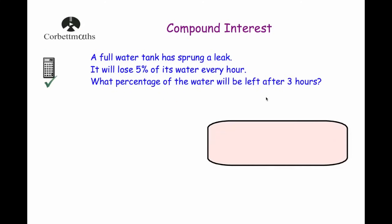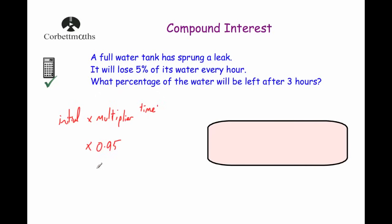Now a question where it's decreasing. A full water tank has sprung a leak and loses 5% of its water every hour. What percentage of water will be left after three hours? Because it's decreasing by 5%, the multiplier is 0.95 — starting from 100% and losing 5% gives 95%, which is 0.95. The time is three hours, so it's to the power of three.